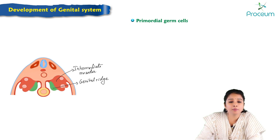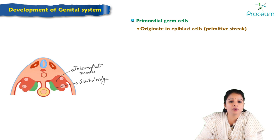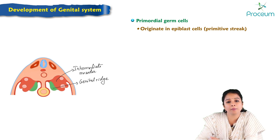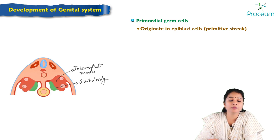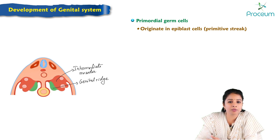Primordial germ cells basically originate from epiblast cells. In the initial stages of the embryo, during the bilaminar germ disc stage, we have two types of cells: epiblast and hypoblast. The epiblast cells are columnar cells which later give rise to the primitive streak in the caudal part of the embryo, and these same epiblast cells further give rise to cells called primordial germ cells.